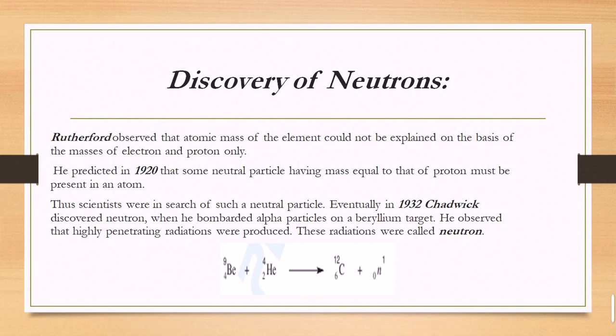He observed that highly penetrating radiations were produced, and these radiations were called neutrons. Basically, when beryllium is bombarded with alpha particles, it produces carbon and a neutral particle — the neutron.